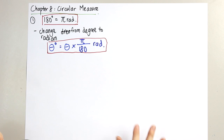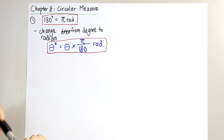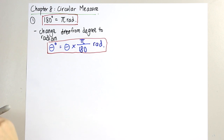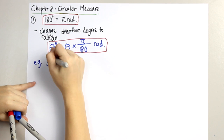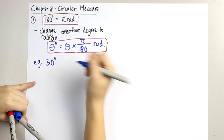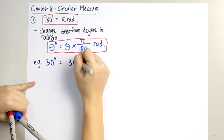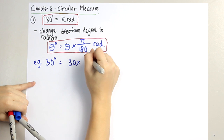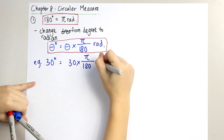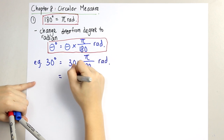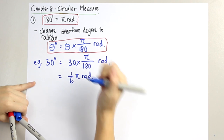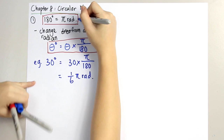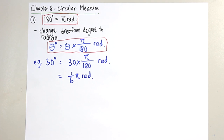For the first example, let's say we are given 30 degrees. We take 30 times pi over 180 radian, and we get 1 over 6 pi radian. We are using the formula: 180 degrees equals pi radian.